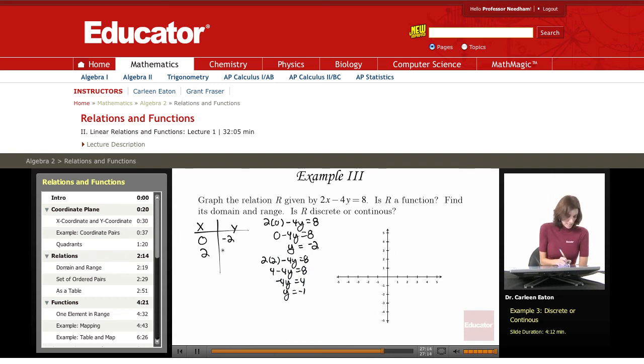And let's do one more. When x is negative 2, this is going to give me negative 4 minus 4y equals 8. Adding 4 to both sides will give me negative 4y equals 12, or y equals negative 3.